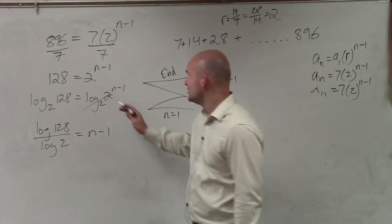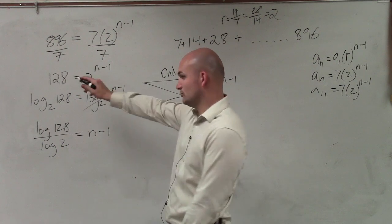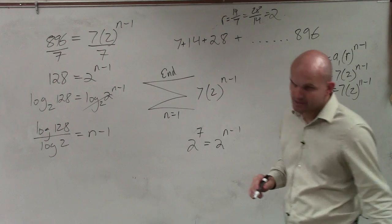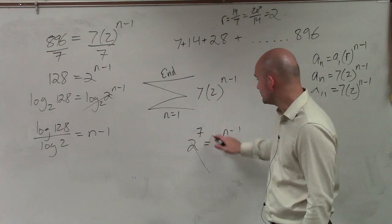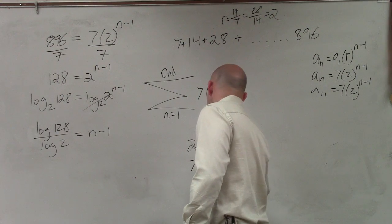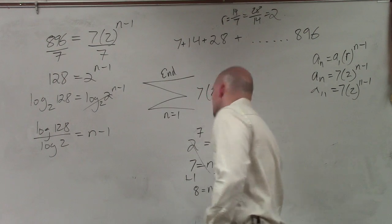2 raised to the 7th. So therefore, I can say 2 to the 7th is equal to 128, which is equal to 2 to the n minus 1. The 1 to 1 property, which we spent time in algebra 2 and earlier this year, divides out. So I can say now, 7 equals n minus 1. 8 equals n.